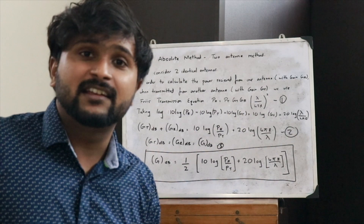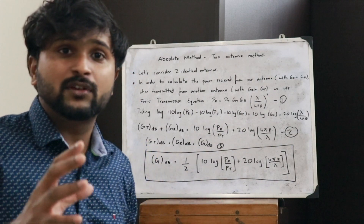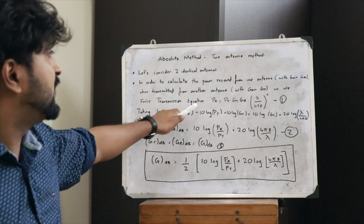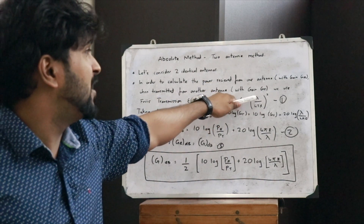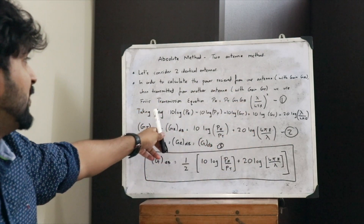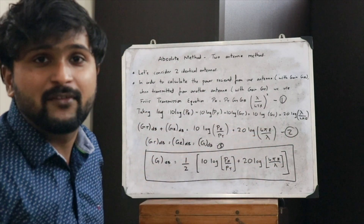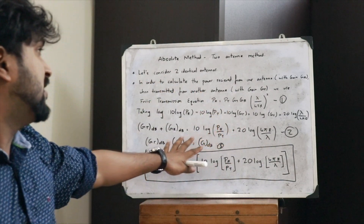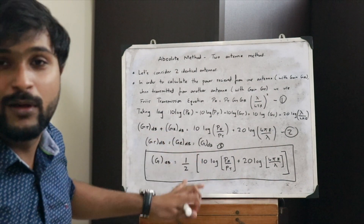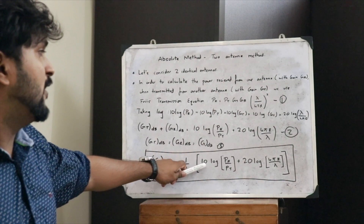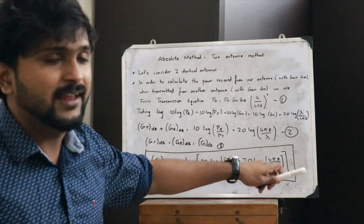To summarize: we consider two identical antennas. The power received at one antenna is obtained using the Friis transmission equation: Pr = Pt × Gt × Gr × (λ / 4πr)². Taking the logarithm and rearranging, and since both antennas are identical (Gt = Gr = G), we get G(dB) = ½ × [10 log(Pr/Pt) + 20 log(4πr/λ)].